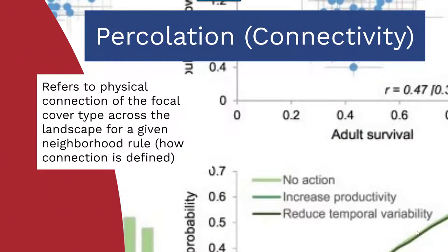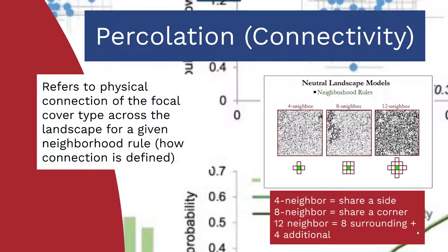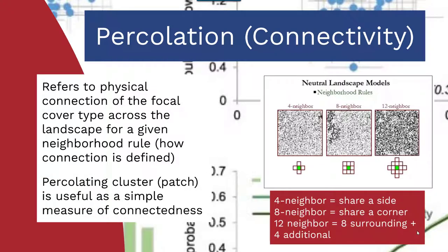Percolation or connectivity refers to the physical connection of the focal cover type across the landscape for a given neighborhood rule — just another means of generating simulations. The neighborhood rule defines how the connection is defined. For instance, the four-neighbor rule states that pixels should share a side with another cover type; the eight-neighbor indicates they should share a corner; and the twelve-neighbor is equivalent to the eight-neighbor plus four additional surrounding pixels. The percolating cluster or patch is useful as a simple measure of connectedness within a model.